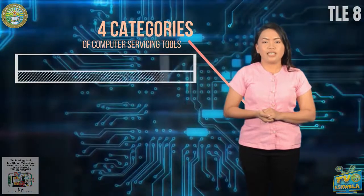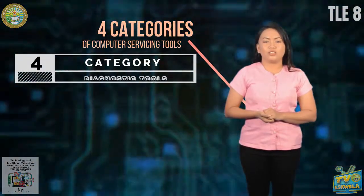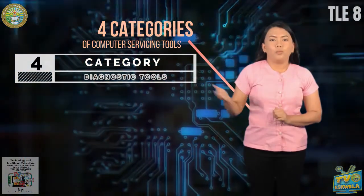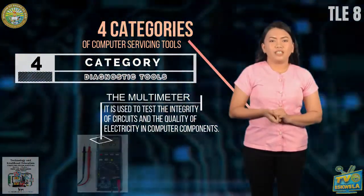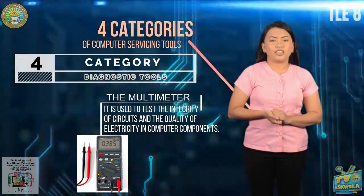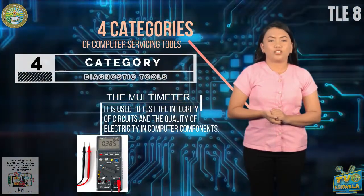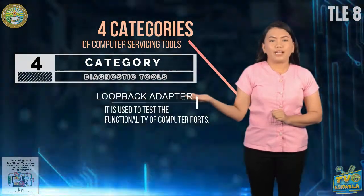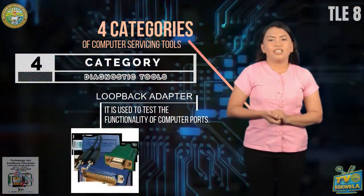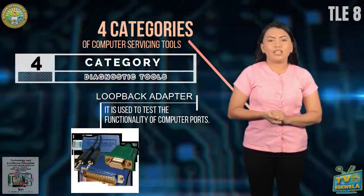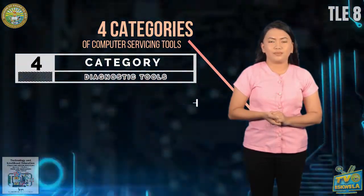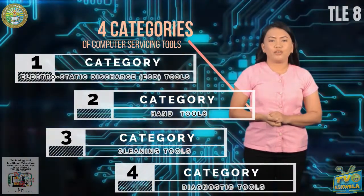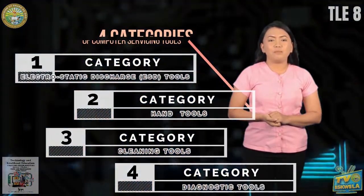The last category is diagnostic tools. Examples are: Multimeter — used to test the integrity of circuits and the quality of electricity in computer components. Loopback adapter — used to test the functionality of computer ports. Those are the four categories of computer servicing tools and their examples.